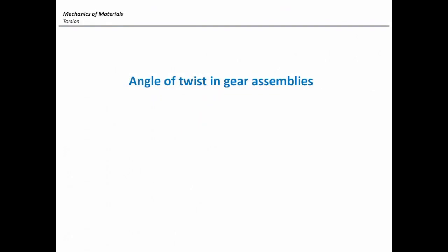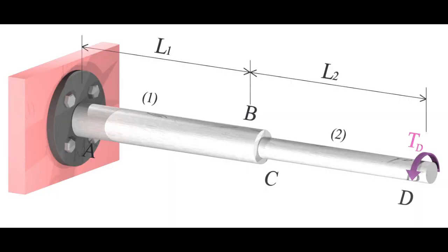The topic that I want to talk about is the angle of twist in the gear assemblies. Consider this case. There are two shafts connected together. Consider you want to determine how much is the twist at the right end, at D.